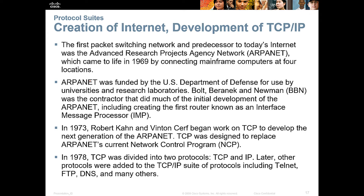The creation of the Internet and development of TCP: the first network was ARPANET, in the late 1960s, heavily funded by the DOD. It was used by universities and research labs to share research. In 1973, TCP was developed as the next generation of ARPANET, designated to replace ARPANET's current network control program known as NCP. In 1978, TCP was divided into two protocols — TCP and IP. Later, other protocols were added to the TCP/IP suite, including Telnet, FTP, DNS, and a host of others.